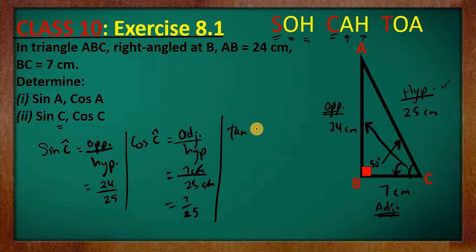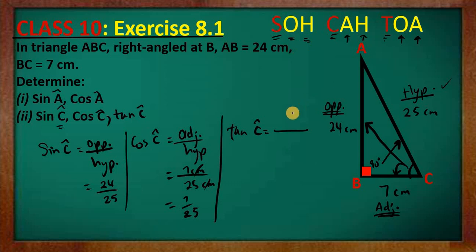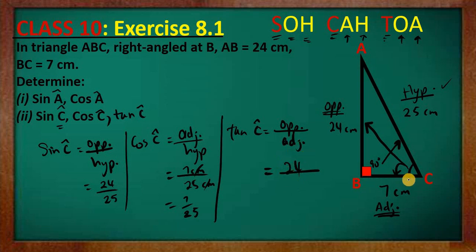For the tangent of acute angle C — using SOH-CAH-TOA, tangent is opposite over adjacent. Opposite in relation to acute angle C is 24 cm, and the adjacent is 7 cm. So the tangent of C is 24 over 7. To summarize: cosine of C is 7 over 25, and sine of C is 24 over 25.